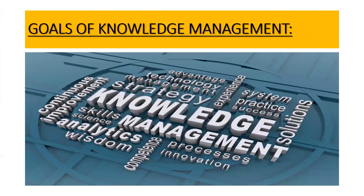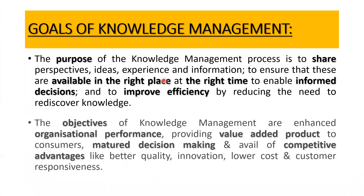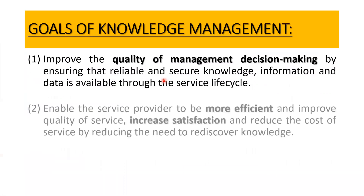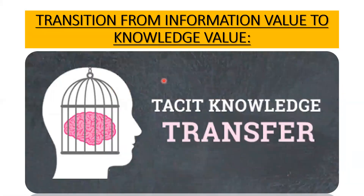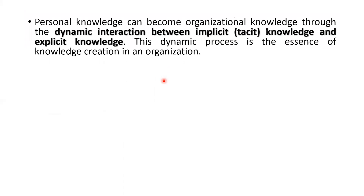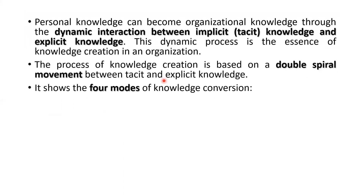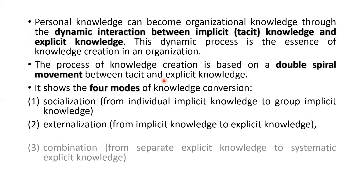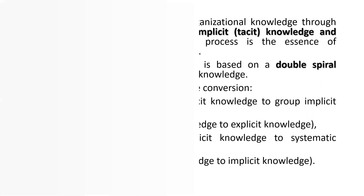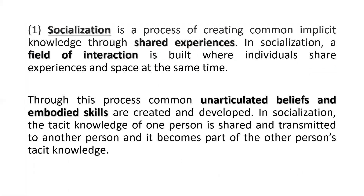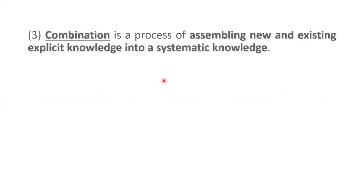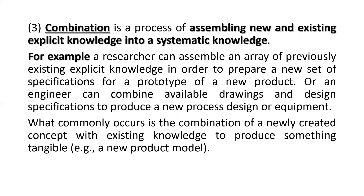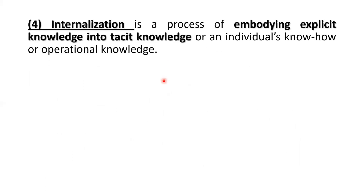We have discussed the goals of knowledge management — what the different purposes of knowledge management are. We also covered a very interesting topic on how information value gets transformed into knowledge value. We understood the double spiral movement between implicit and explicit knowledge considering four modes: socialization, externalization, combination, and internalization.